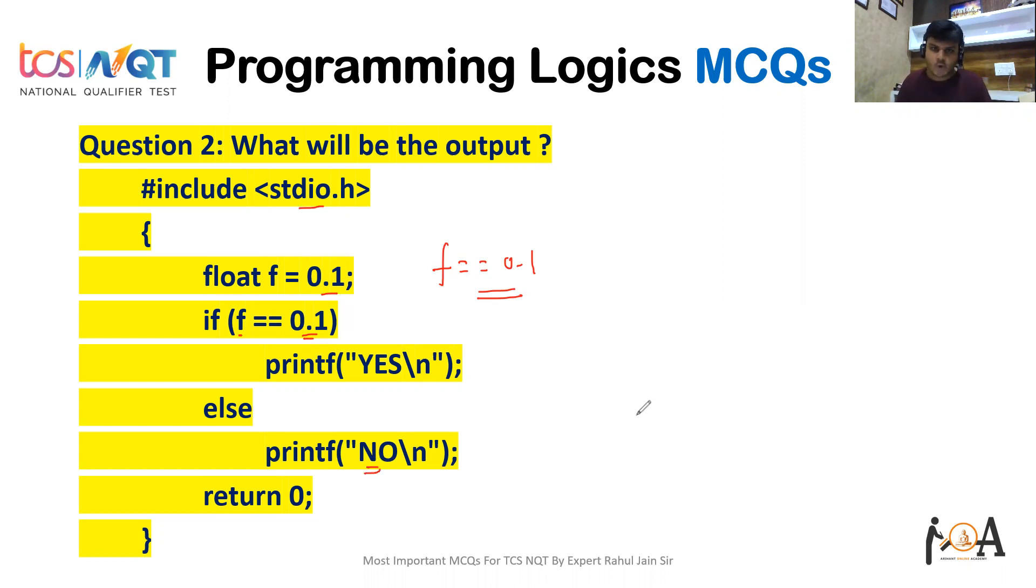NO. Why will it print NO? Because 0.1 by default is taken as a double, but f is a float. So the correct way would be f == 0.1f. If it was in the declaration, then YES would be printed, but it is not here, so the correct output would be NO.